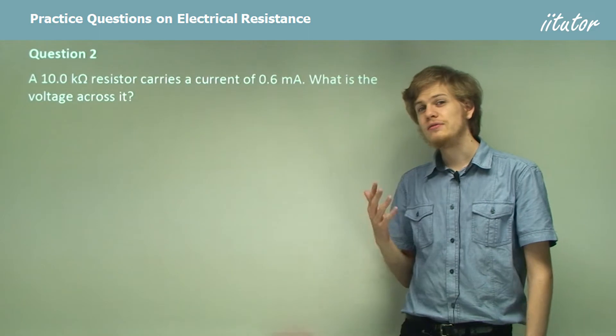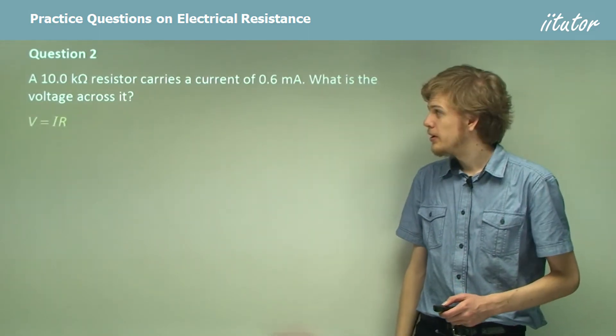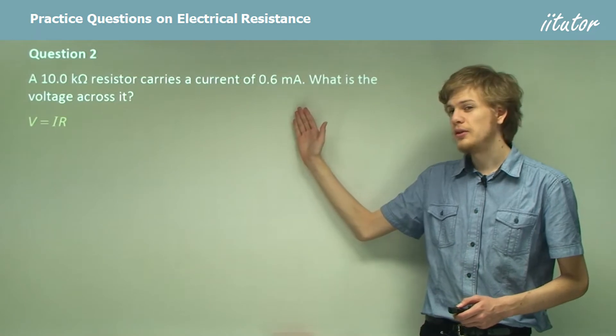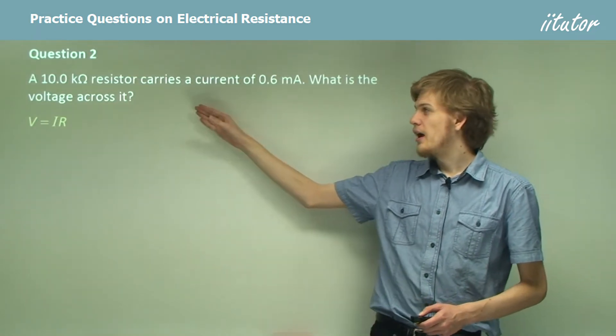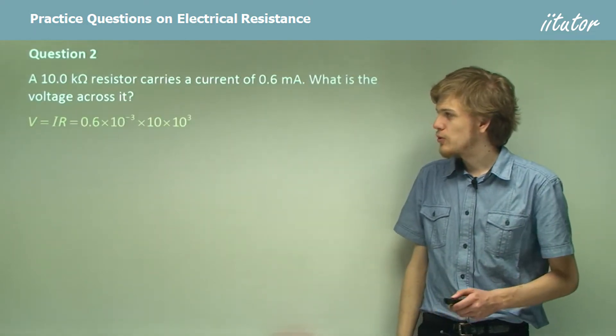Now in this case we don't even need to rearrange Ohm's equation. V equals IR and substituting 0.6 milliamps for I and 10,000 ohms for R, we have an equation that looks like this.